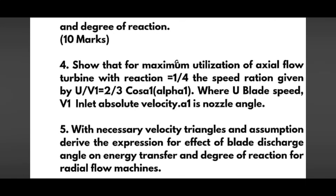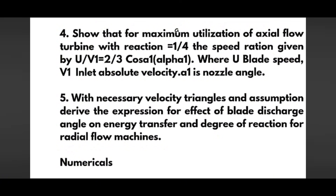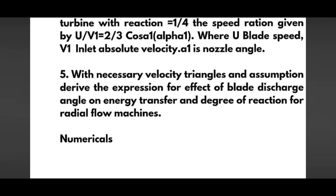Another derivation: show that for maximum utilization of an axial flow turbine with reaction, the speed ratio is given by u/v₁ = (2/3) cos α₁, where u is the blade speed, v₁ is the inlet absolute velocity, and α₁ is the nozzle angle. Next, with necessary velocity triangles and assumptions, derive the expression for the effect of blade discharge angle on energy transfer and degree of reaction for radial flow machines.